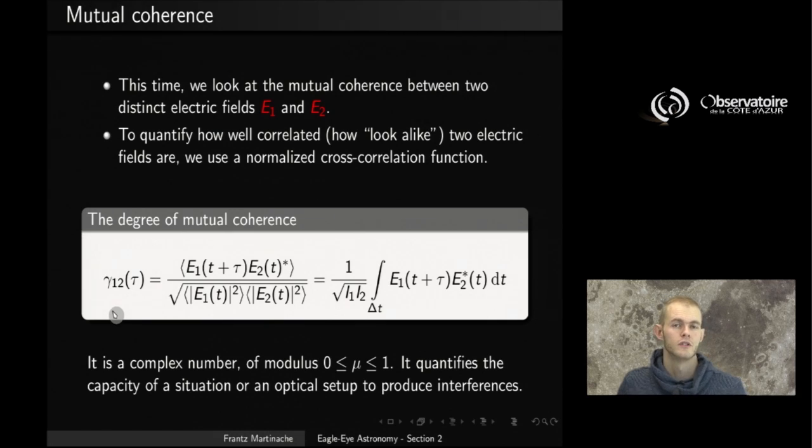And the notation for this is traditionally to use the letter gamma. Because we are looking at the mutual coherence between two electric fields, we have to label it using two indices, one and two, just to match the electric fields E1 and E2. And what that function is, is just like before, the time average correlation between E1 and E2, and normalized by the modulus of both E1 and E2.